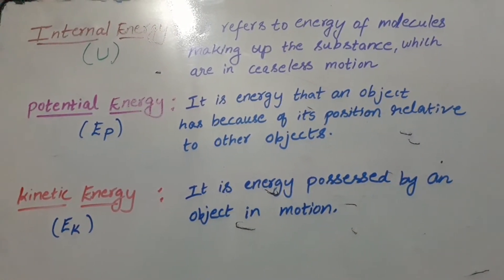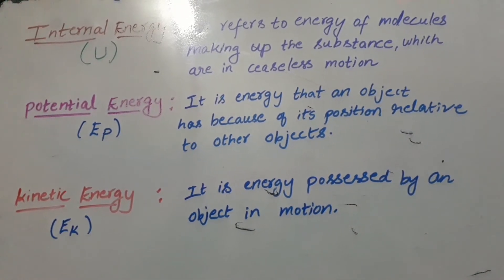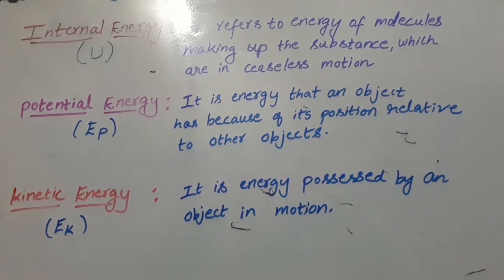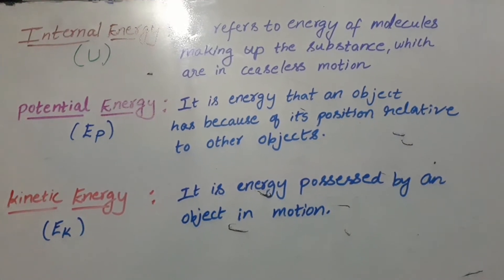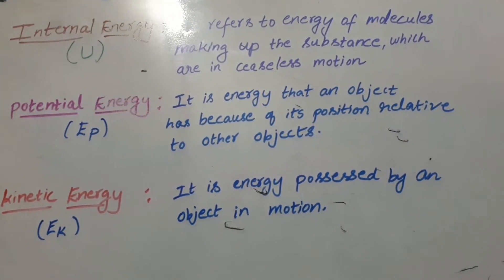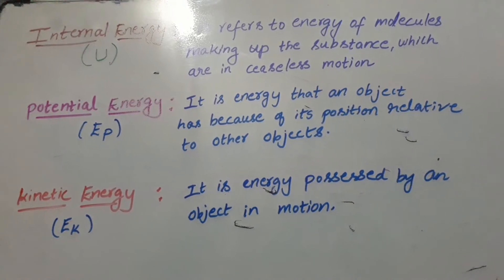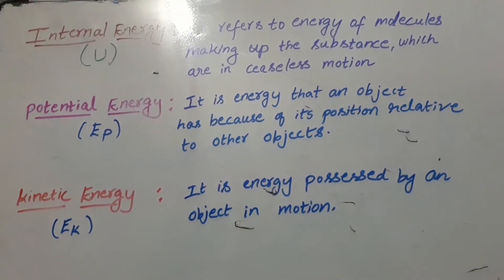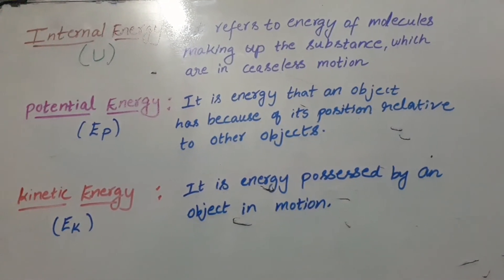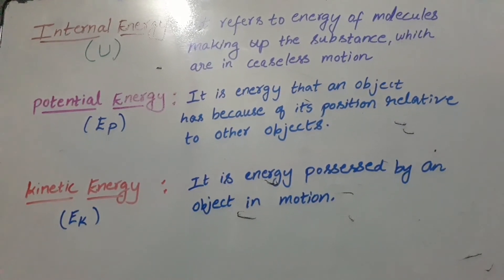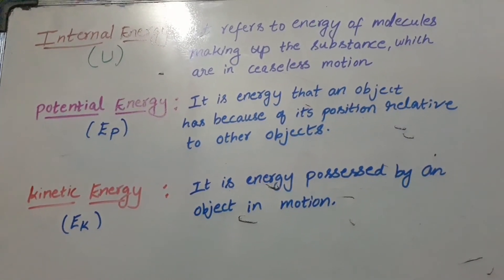Before going into the detailed equation of the first law of thermodynamics, we need to know some key terms. The first is internal energy, represented by the symbol U. Internal energy refers to the energy of molecules making up the substance, which are in ceaseless motion. Delta U represents the finite changes in internal energy.